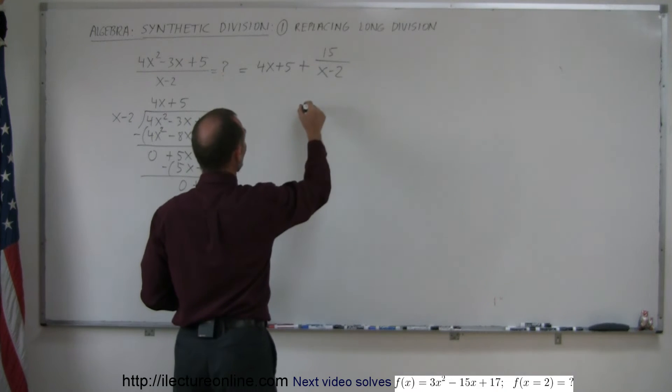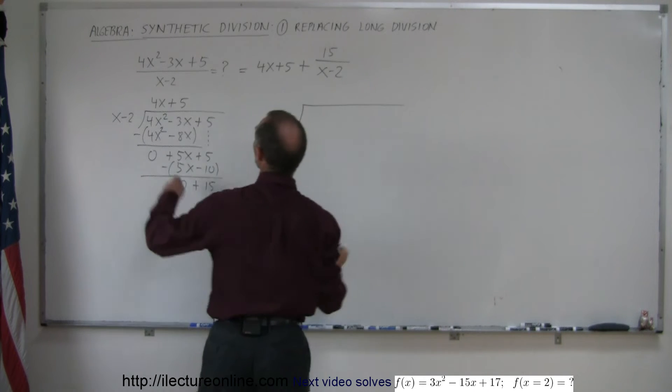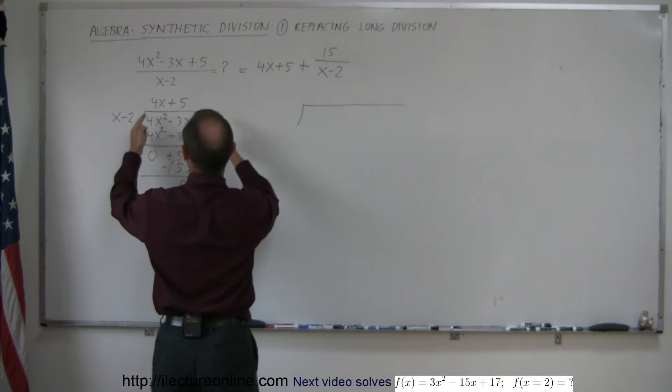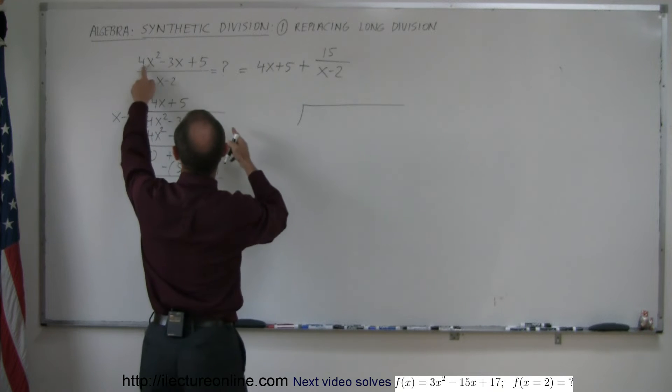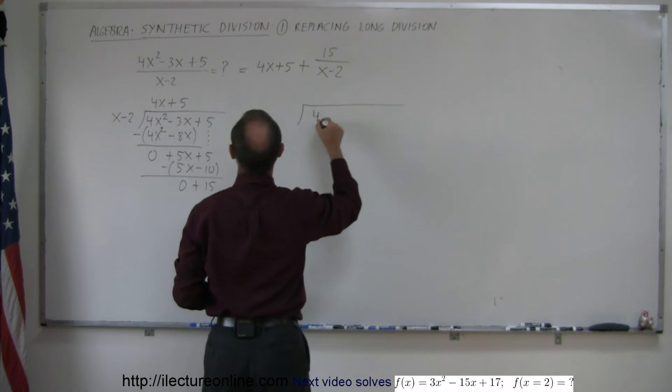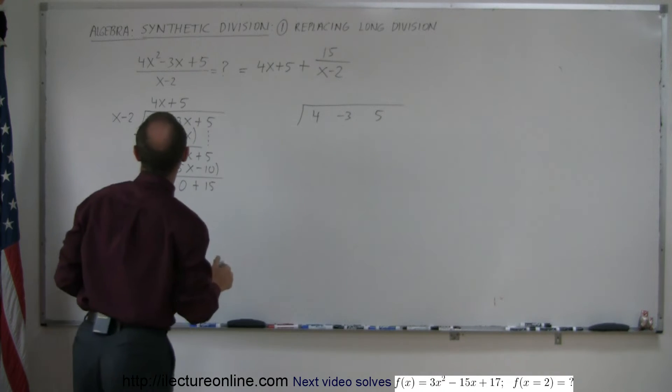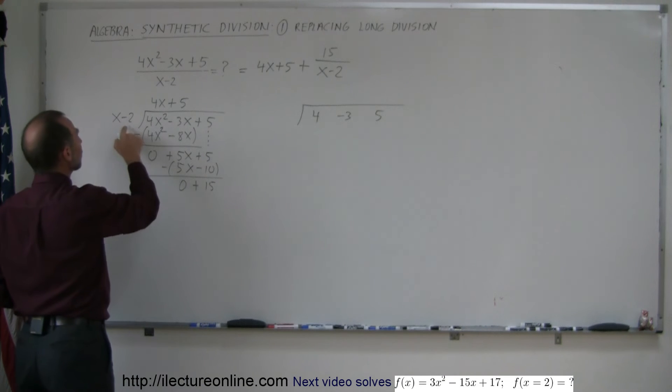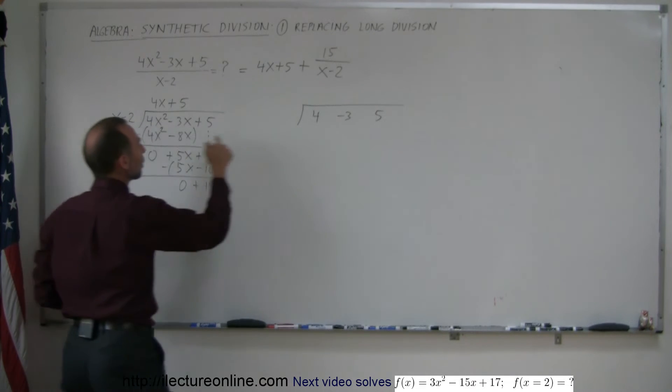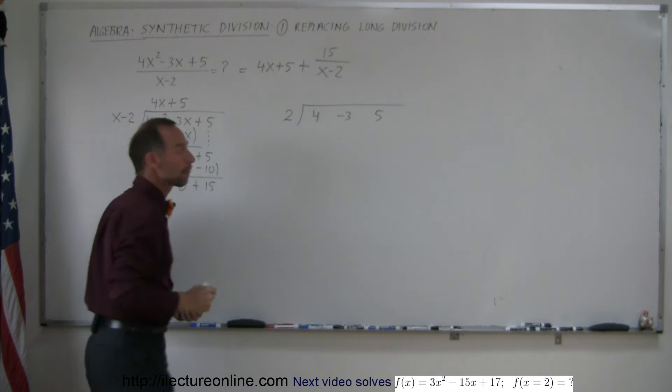Synthetic division is as follows. You put the coefficients of the polynomial inside here. Just instead of this with x's, you simply put the coefficients down. So this is 4, minus 3, and 5. And then, instead of putting x minus 2 down, you put the negative of the second number here. So instead of putting negative 2, we put a positive 2 down.